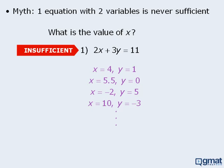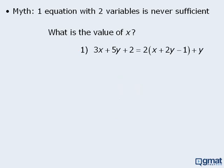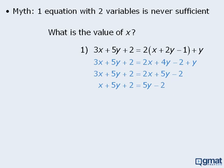Now these results are sometimes expanded into the myth that suggests that one equation with two variables never provides sufficient information. This is not the case. Take this example — here we want to find the value of x, and statement 1 gives us one equation with two variables. Before we conclude that statement 1 is not sufficient, let's take a closer look at this equation. We can simplify by first expanding the right-hand side, then simplifying it. From here we subtract 2x from both sides, then subtract 5y from both sides. Finally, when we subtract 2 from both sides, we can see that x equals negative 4, which means statement 1 is sufficient.